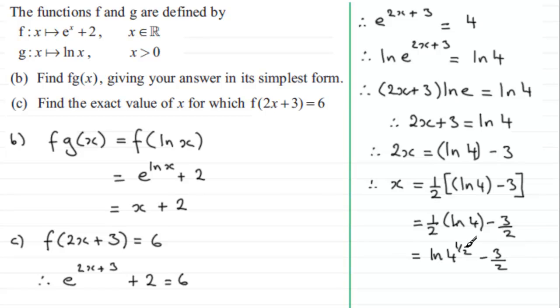Now 4 to the power half, that's the square root of 4, is 2. So you've got the natural log of 2 minus 3 over 2.